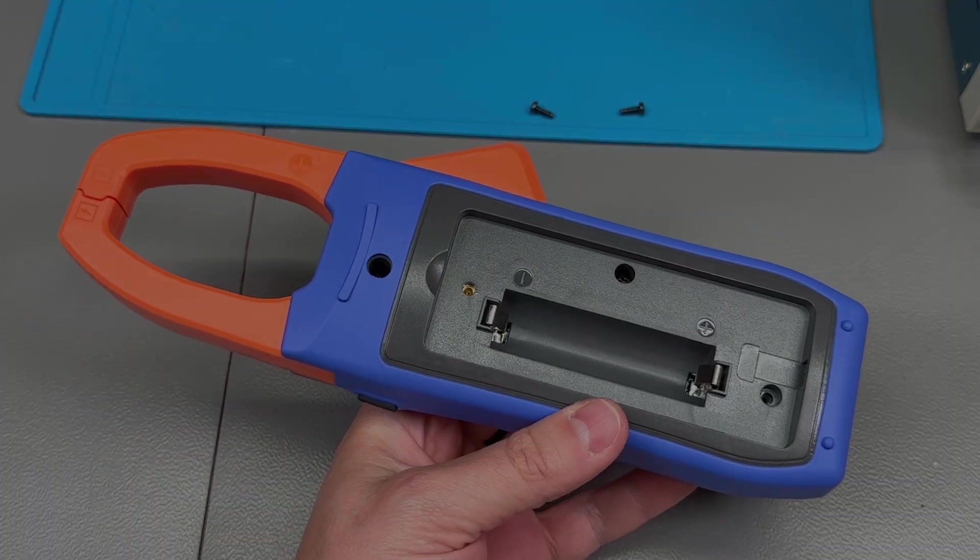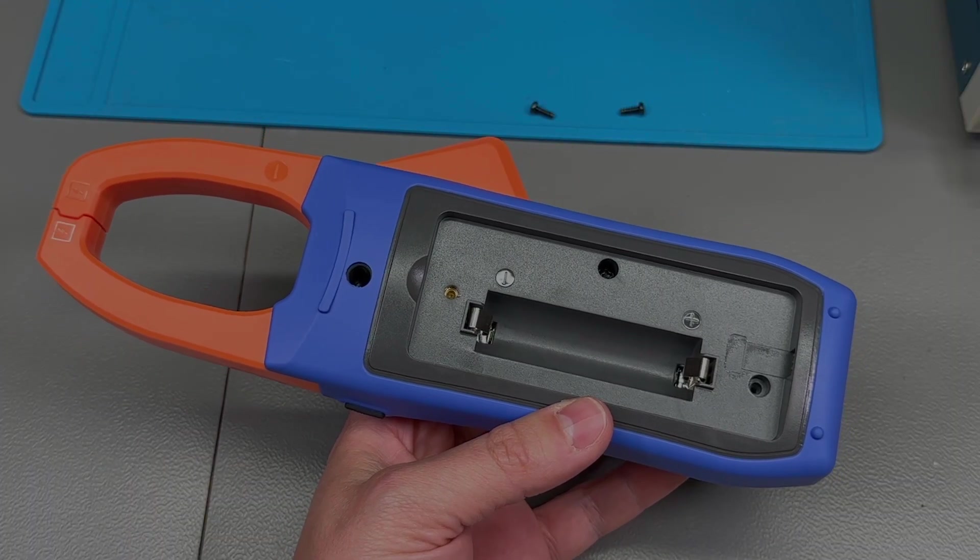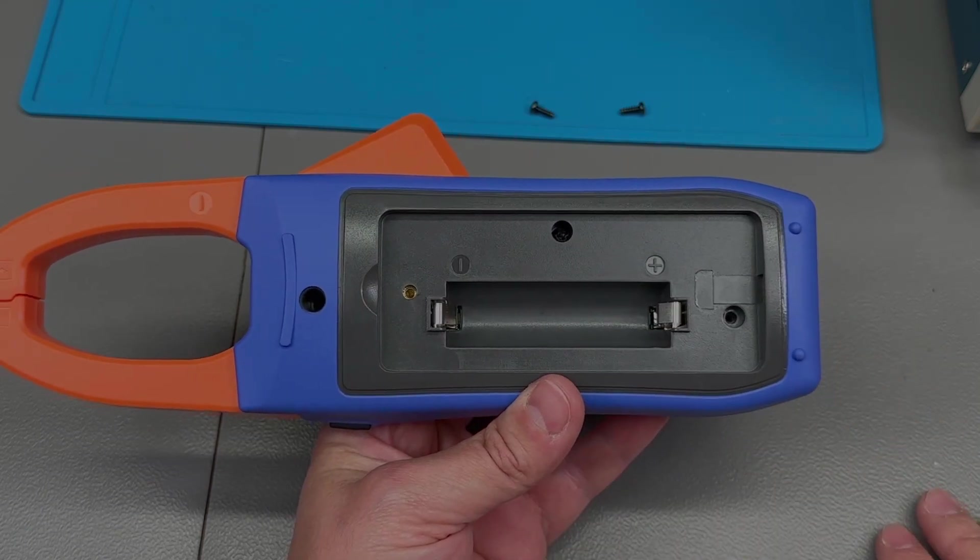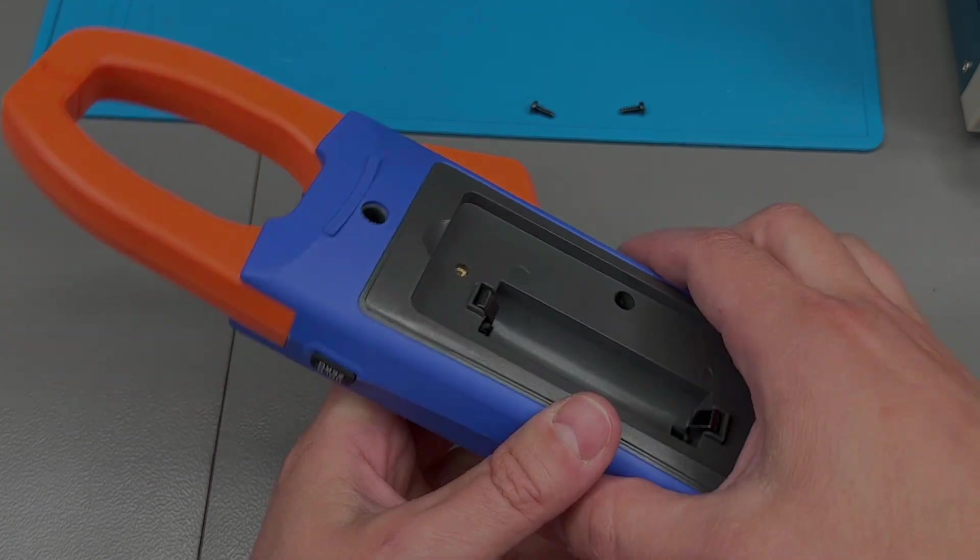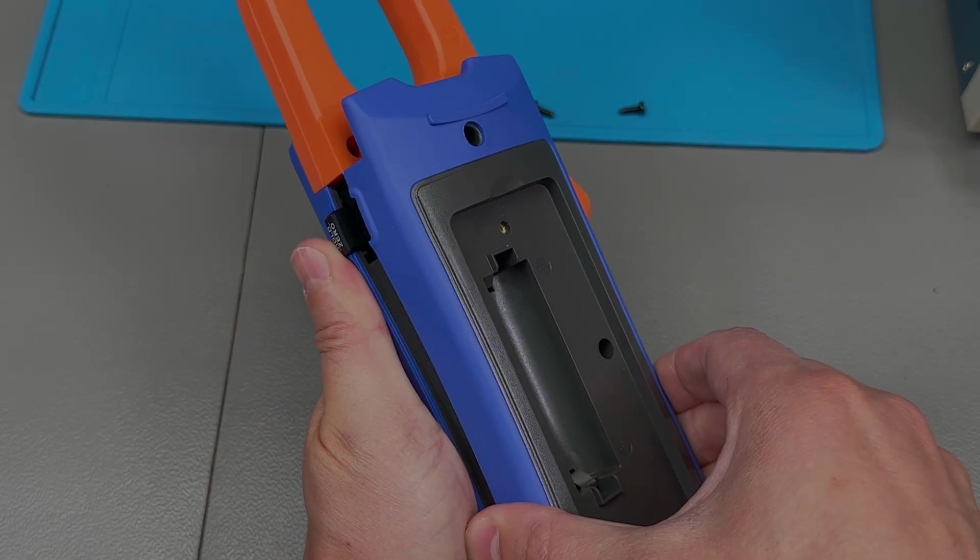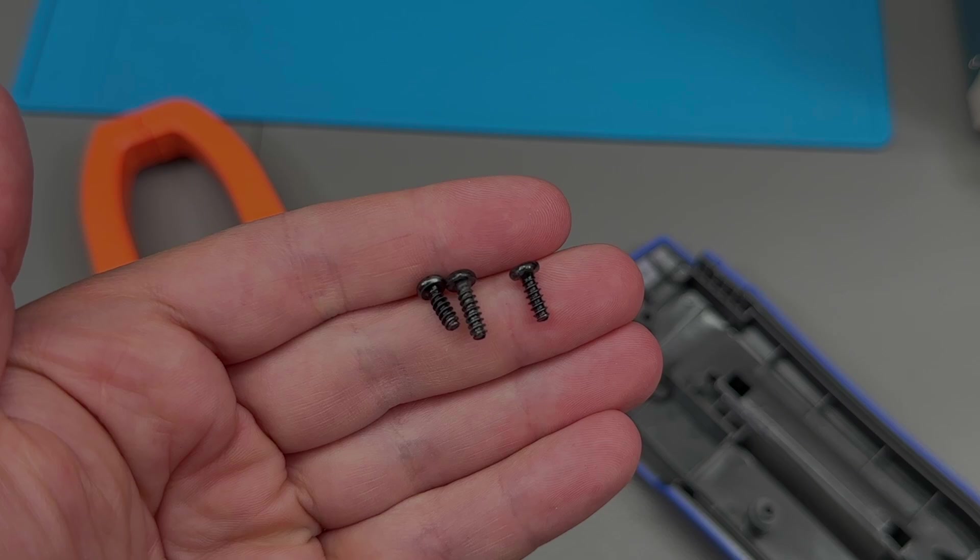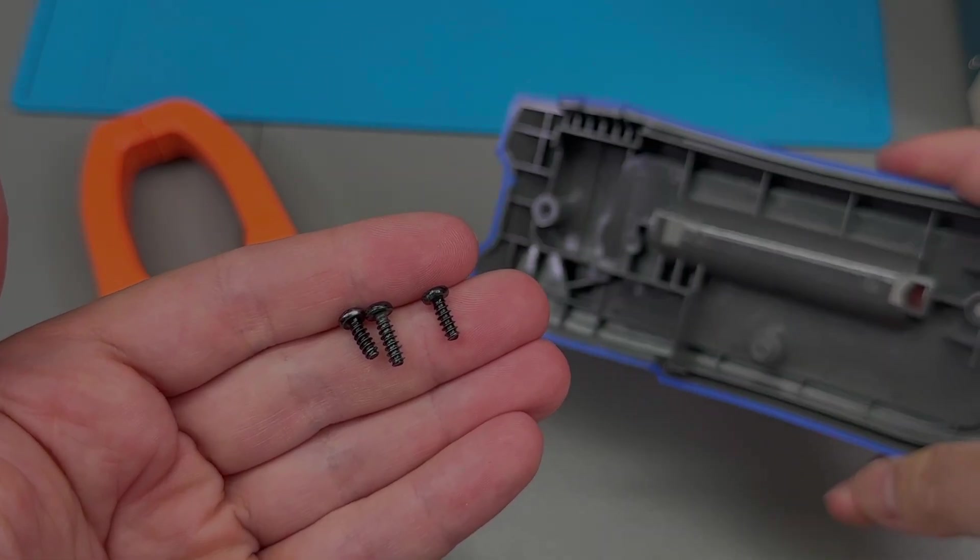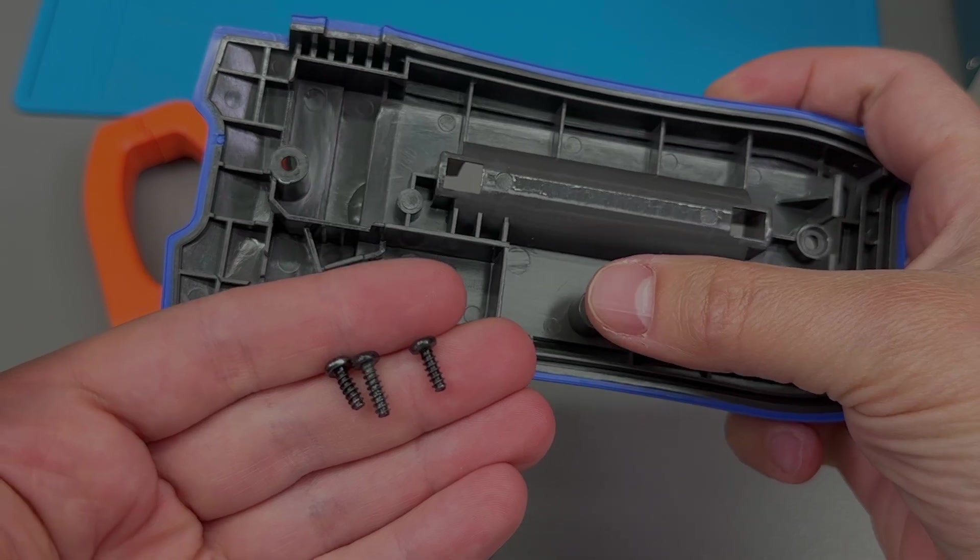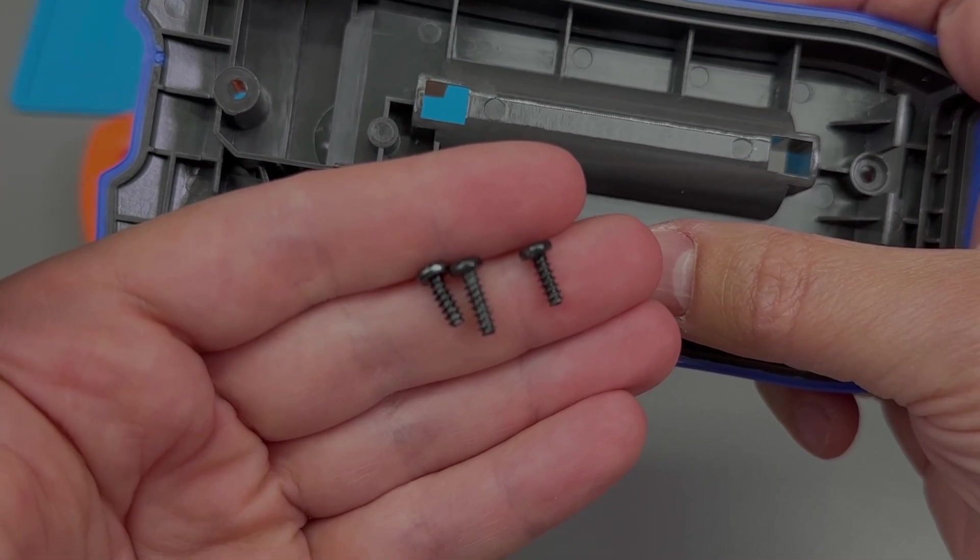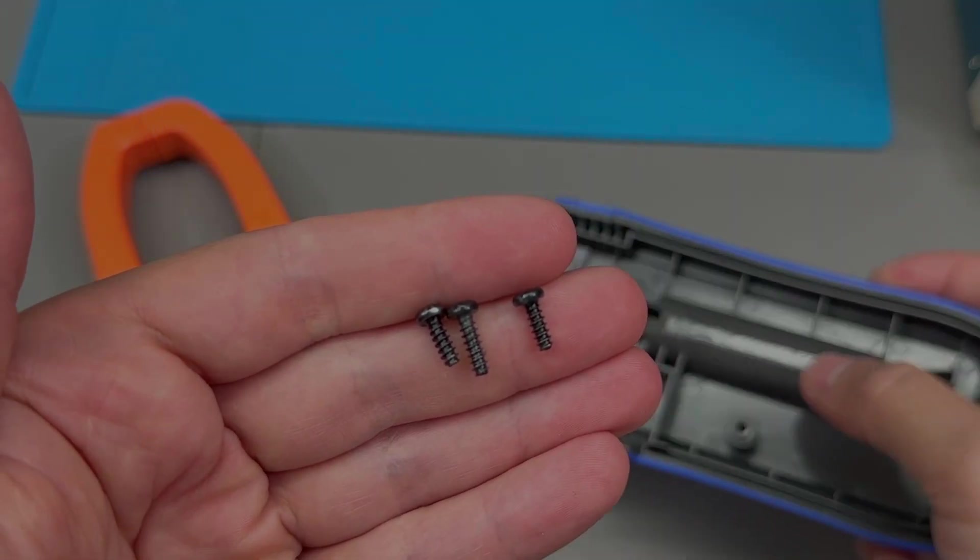Now I'm sure you guys are as curious as I am to take a look inside this meter. There's three self-tapping screws to be taken out, and now we can take a peek inside. And one word of caution here, not all three screws are the same size, with the one in the middle being longer.